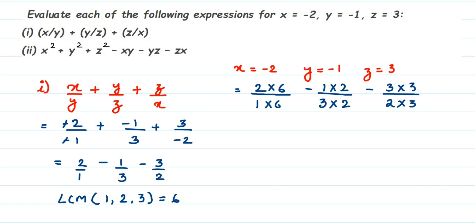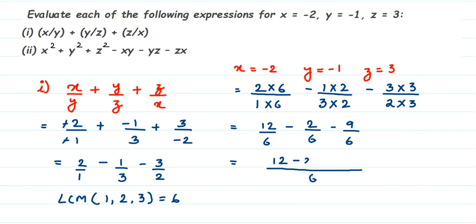Now the denominators are all 6, so we can operate: 12/6 - 2/6 - 9/6. Taking the single denominator 6, the numerator is 12 - 2 - 9. Both -2 and -9 are negative, so adding them gives -11, and 12 - 11 = 1. So the answer to the first question is 1/6.